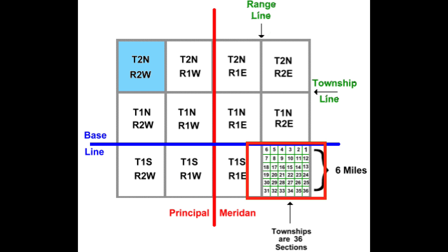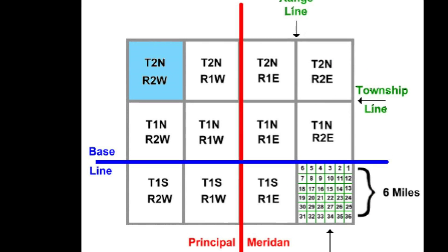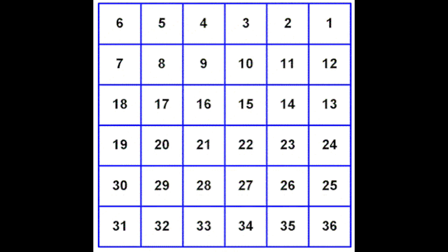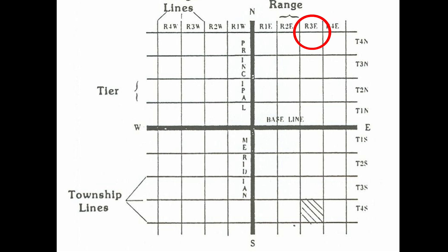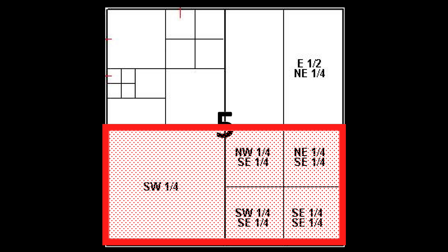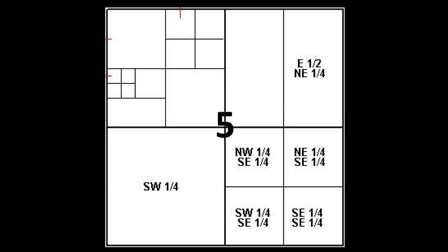Each six-mile square is called a township and it contains 36 square miles. Within a township you have 36 sections, and each section is one square mile or 640 acres. If you're looking for, say, section 5, range 3 east, township 4 south, all you do is count over 3 to the east and then down 4 to the south, then in that township you locate section 5. Sections can be further divided into halves or quarters, and the quarters can be broken down into halves or quarters, and so on.